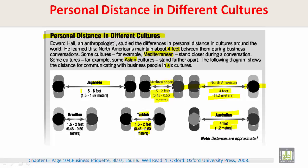Japanese cultures are 5 to 6 feet, or 1.5 to 1.82 meters. Brazilian culture is 1.5 to 2 feet or 0.45 to 0.60 meters. We see something in common among Brazilians, Turkish people, and people from the Mediterranean area. We also see something in common between North Americans and Australians. Trailing far ahead are the Japanese at 5 to 6 feet or 1.5 to 1.82 meters from each other.